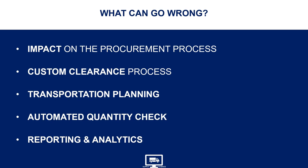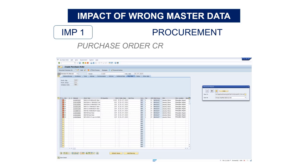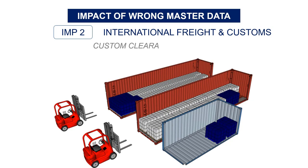Issues can start when the procurement team creates the first purchase order after the MDM team has confirmed item creation. They only need to enter the supplier code, item code, delivery location, and number of items — normally the system fills in the rest automatically. Problem: the unit price on the PO is wrong because of a mistake during master data entry. Therefore the PO is refused by the supplier. You need to correct the mistakes manually and reorder, and the delivery will be delayed — especially impactful if you are preparing a new collection launch.